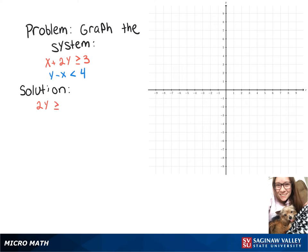We're going to subtract x over to leave us with 2y is greater than or equal to 3 minus x. Now dividing both sides by 2 gives y is greater than or equal to 3 halves minus 1 half x.